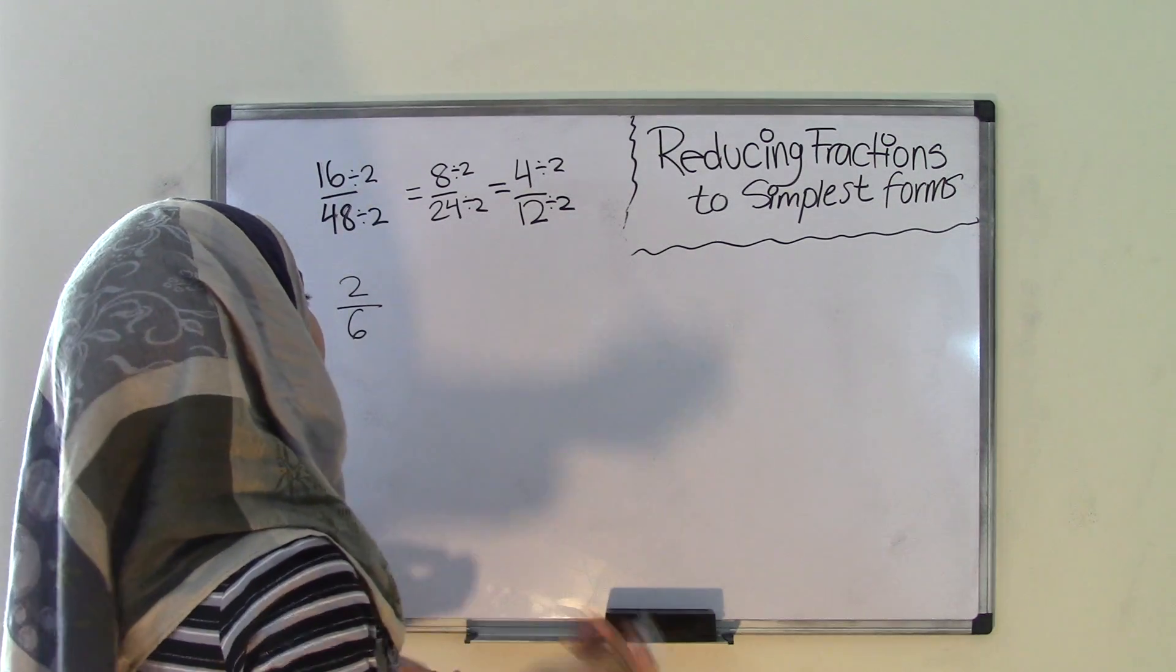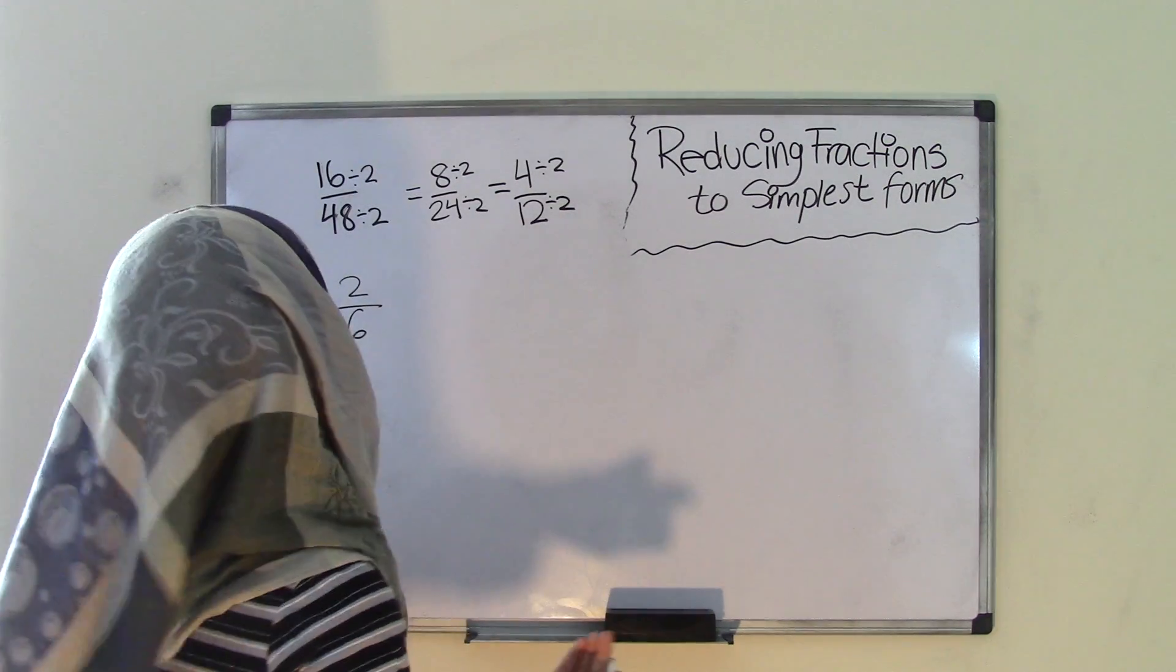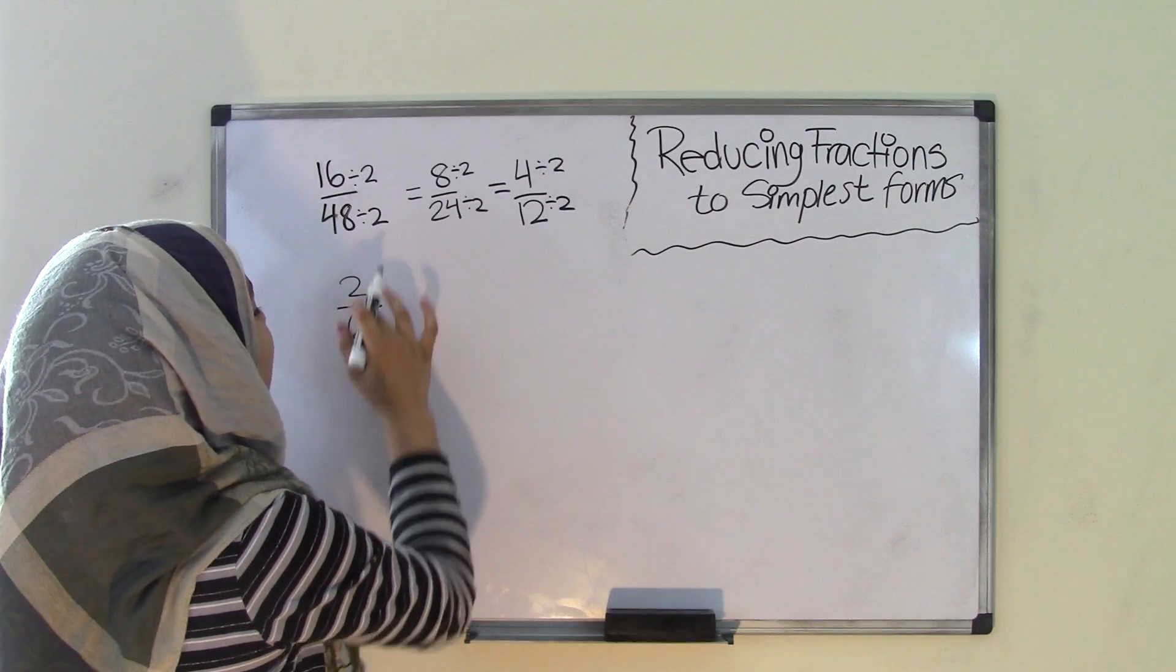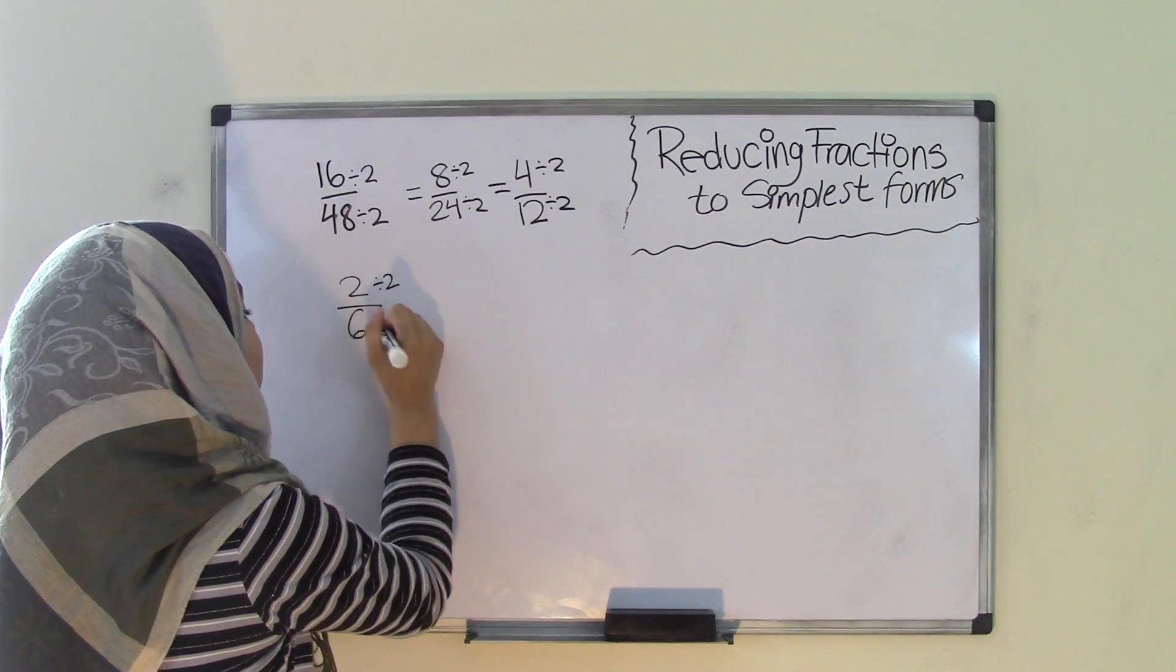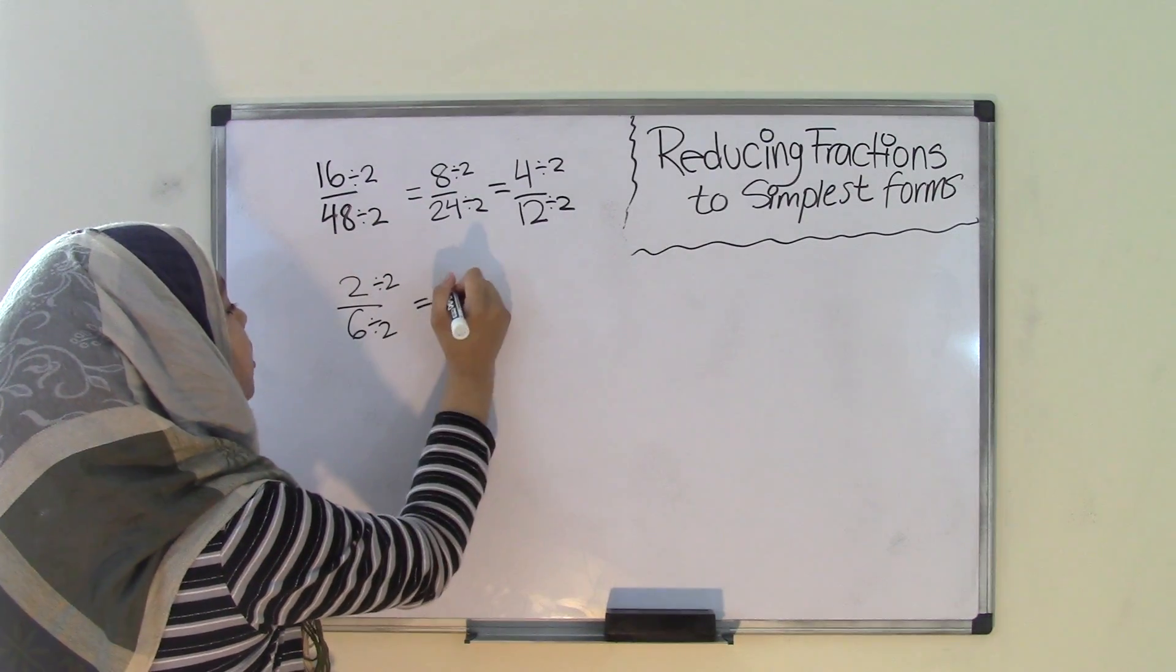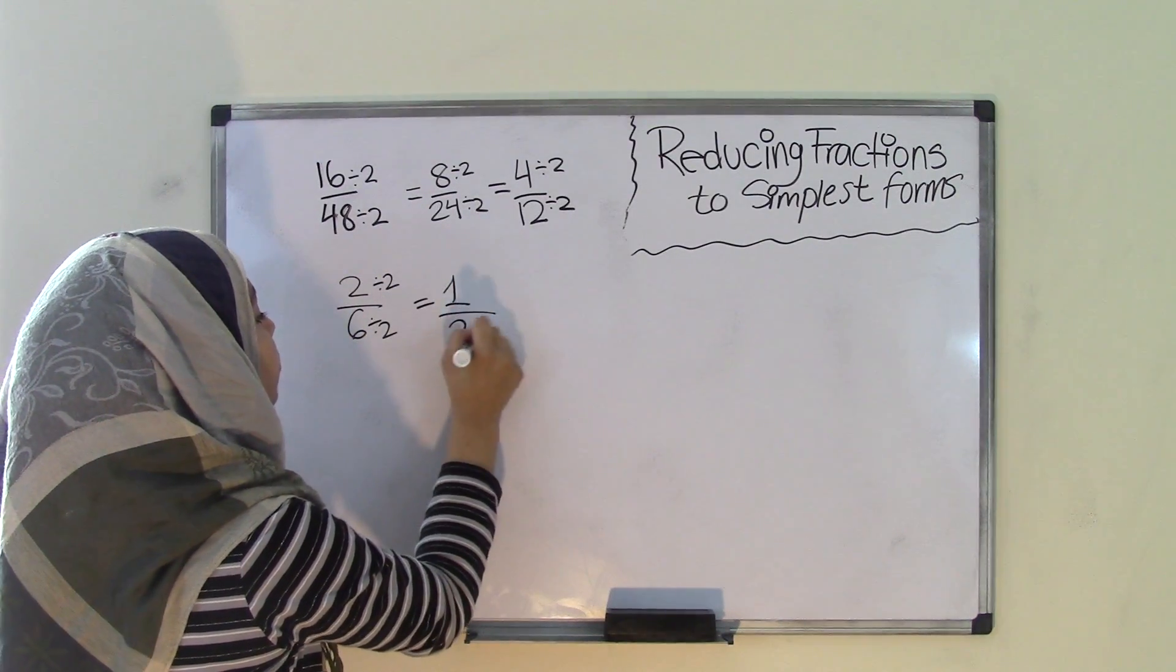Now can we do this further? Well let's find out. If we divide by 2, because remember 2 and 6 are both even numbers. So 2 divided by 2 and 6 divided by 2. 2 divided by 2 is 1 and 6 divided by 2 is 3.